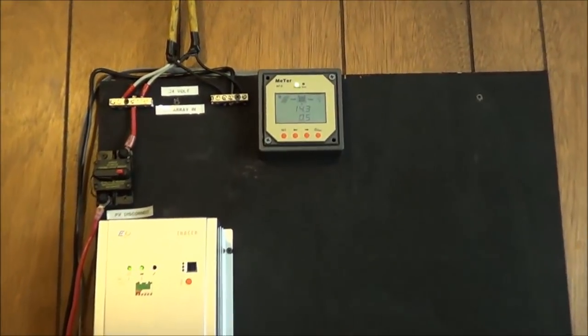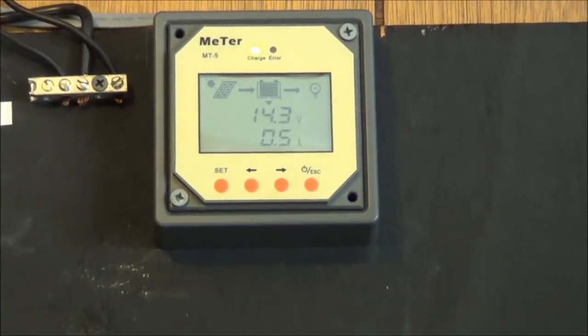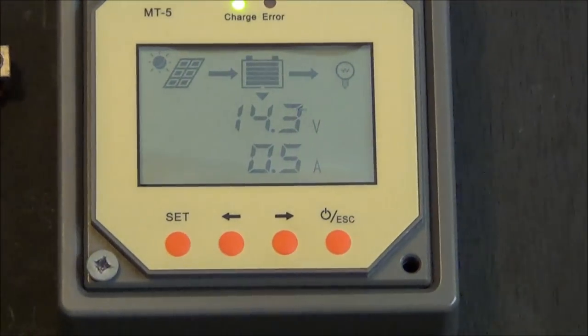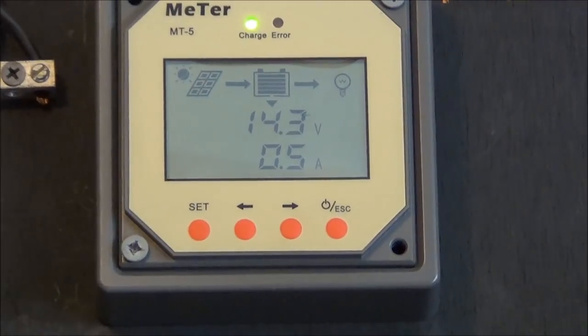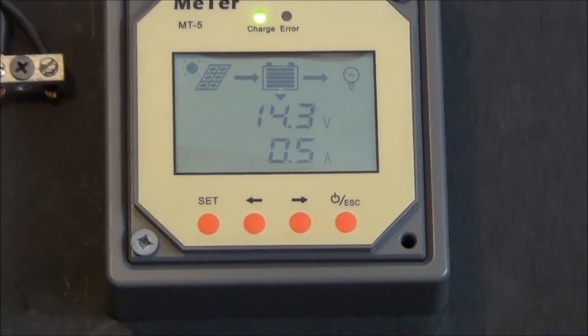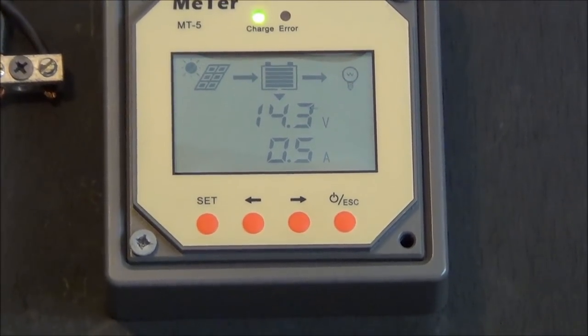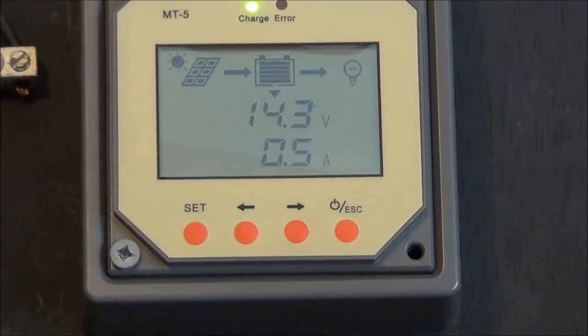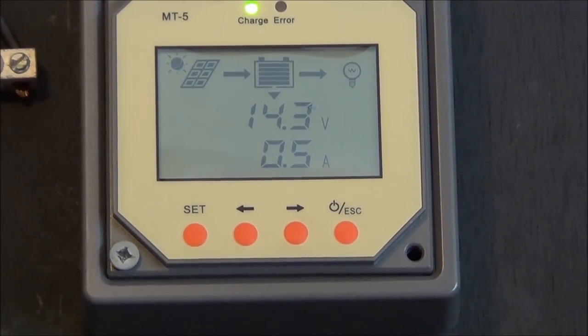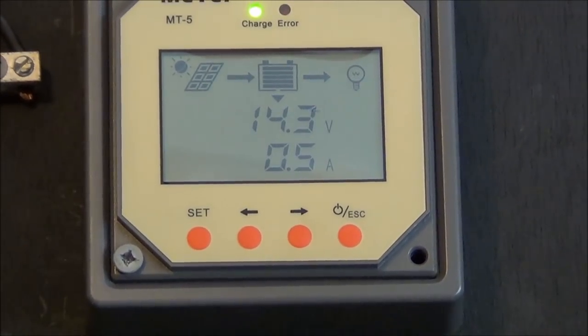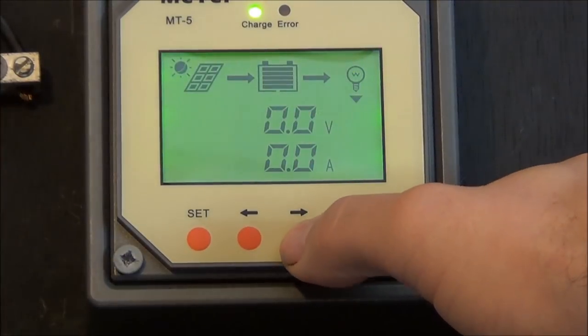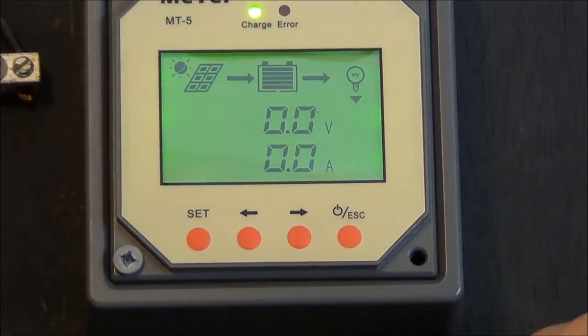This is the little box that comes with the tracer. It gives you some information. It's not as good as a Bogart. I'll run through a few of the settings for you. It has 14.3 volts on the battery. That's your light output because you do have an output down here.